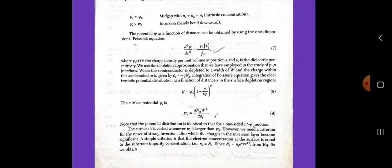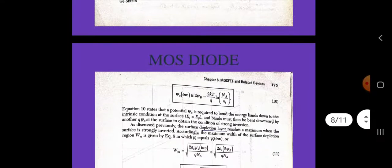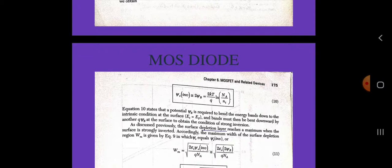We obtain psi_s equals 2kT/q times ln(Na/ni). This equation states that the potential psi_B is required to bend the energy bands down to the intrinsic condition at the surface where Ei equals EF, and the bands must be bent downward by another q psi_B at the surface to obtain the condition of strong inversion.